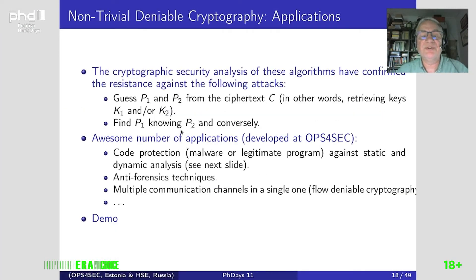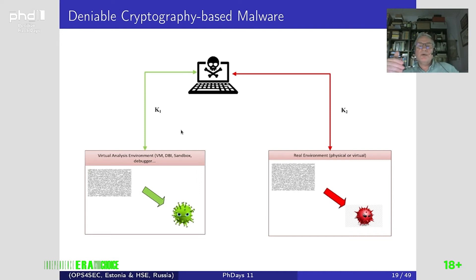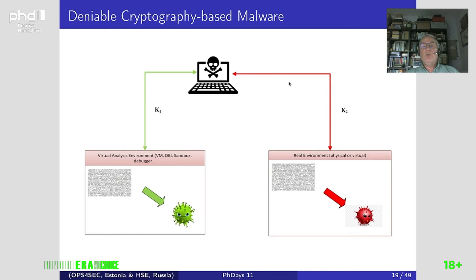Let us come back to the slides. In our context, we have an environment with a binary code that is encrypted. The binary code is able to perform analysis and determine very precisely whether it is currently being analyzed — for example in a virtual machine, DBI, sandbox, and so on — or if it is in a real environment. The malware communicates with a command and control, and if the malware determines it is currently being analyzed, one key is sent and the malware decrypts itself as innocent-looking plaintext data. On the contrary, a different key produces the real malware.